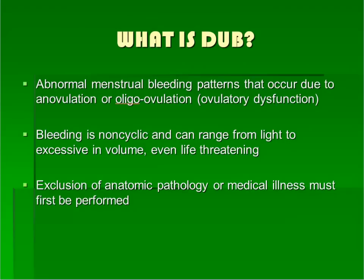DUB, or dysfunctional uterine bleeding, is the term used for any abnormal uterine bleeding that is not associated with a structural defect or a medical condition. DUB indicates the presence of anovulation. The characteristics of DUB can range widely from infrequent light periods to constant heavy bleeding. DUB is a diagnosis of exclusion — to make the diagnosis, other etiologies must be ruled out.